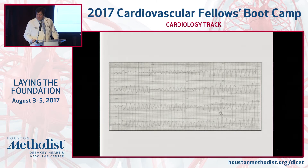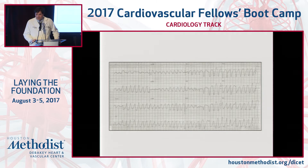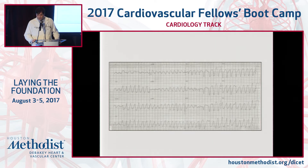Here you can see what we consider polymorphic ventricular tachycardia. You can also see this could be considered torsades de pointes because there are significant axis changes. The beauty about torsades de pointes is that the diagnosis is very narrow — usually it's prolonged QT and low magnesium; those are the usual causes.